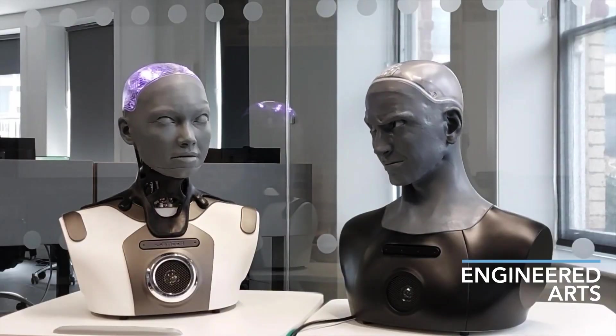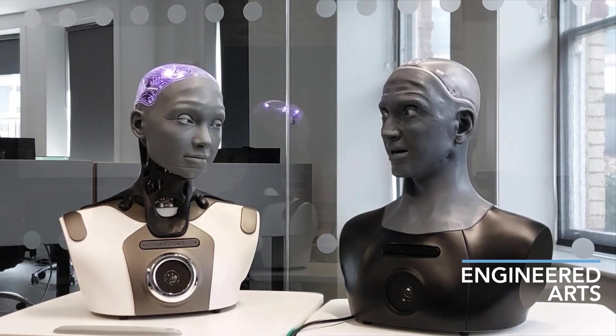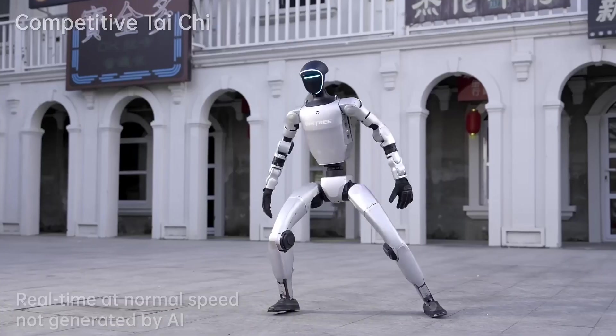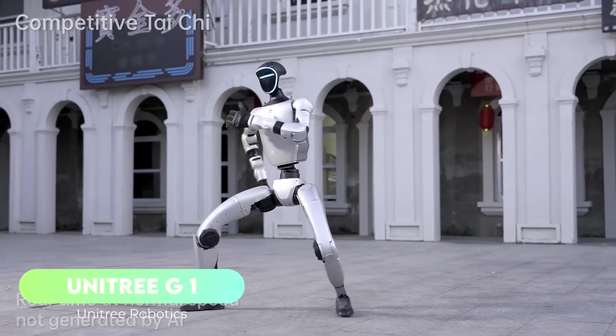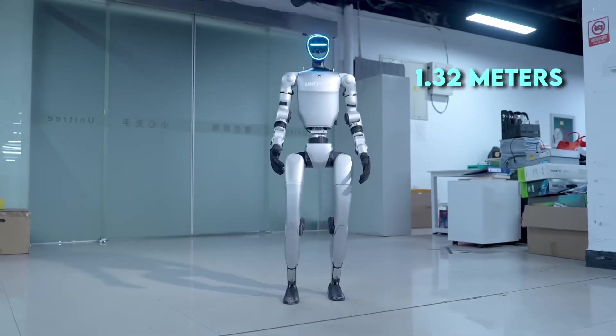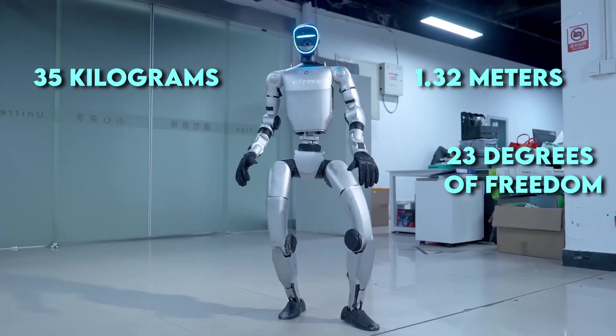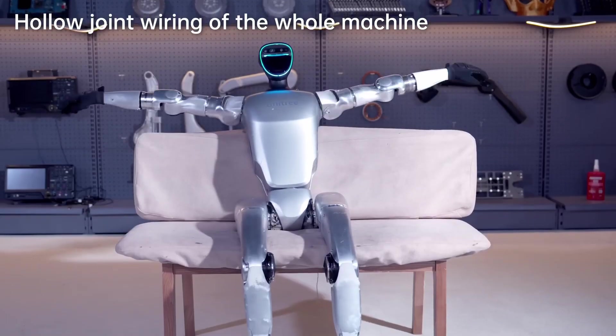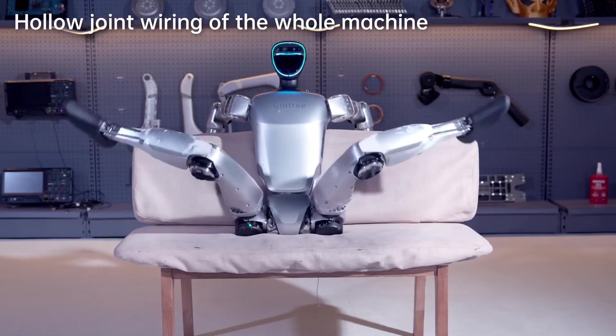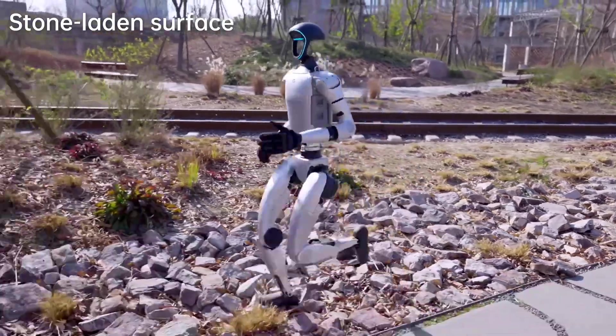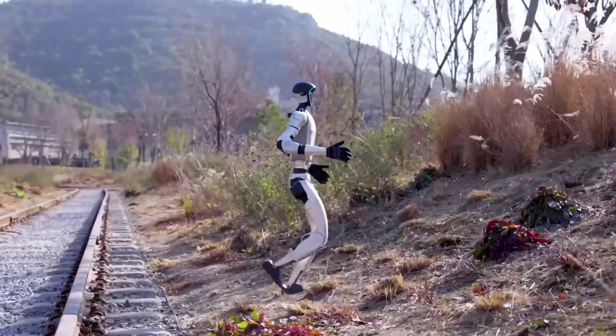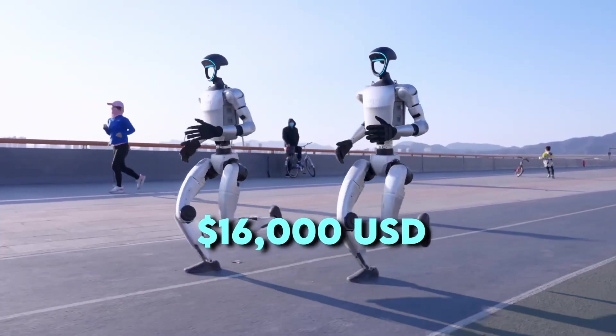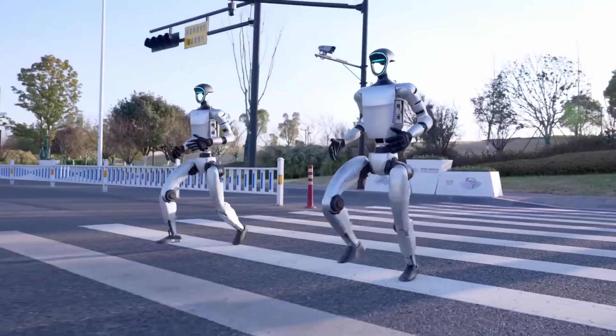Number 7: Unitree G1 by Unitree Robotics. Unitree launched its compact humanoid, the G1, in May 2024. It stands around 1.32 meters tall, weighs 35 kilograms, and features 23 degrees of freedom with the option to expand that to 43. Power comes from a 13-cell battery rated at 9,000 milliamp hours with support for hot swapping. Inside, custom high-torque motors enable sharp, agile movement. The developer edition sells for about $16,000 USD, undercutting most Western-built humanoids in this class.